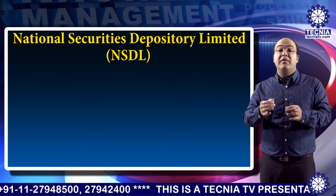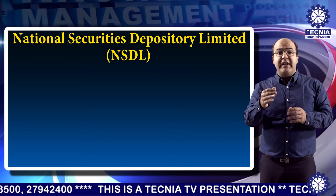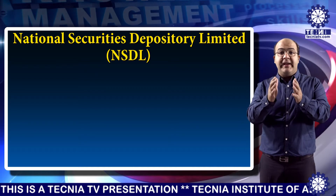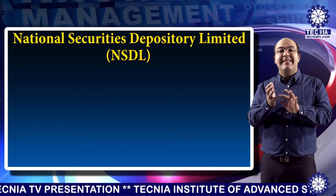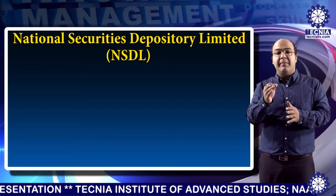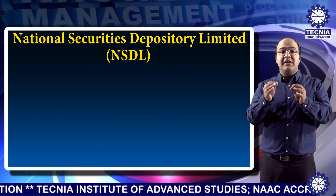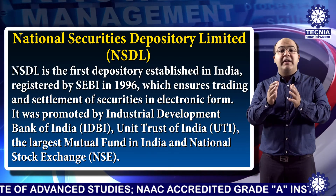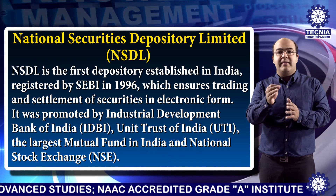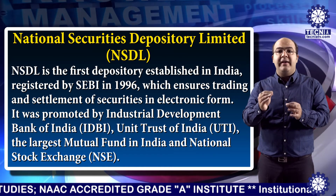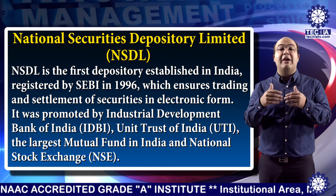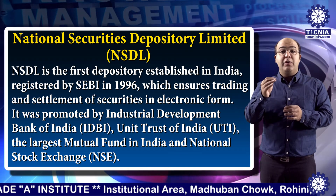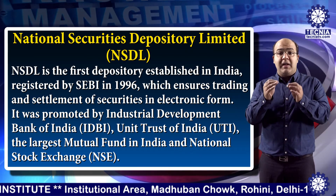Now we will discuss the types of depository. There are two types of depository in India: National Security Depository Limited (NSDL) and Central Depository Services Limited (CDSL). NSDL is the first depository established in India, registered by SEBI in 1996, which ensures trading and settlement of securities in electronic form. It was promoted by Industrial Development Bank of India (IDBI), UTI — Unit Trust of India, the largest mutual fund in India — and National Stock Exchange (NSE).